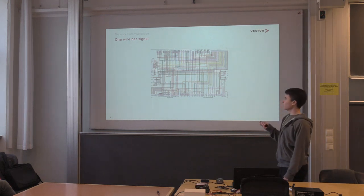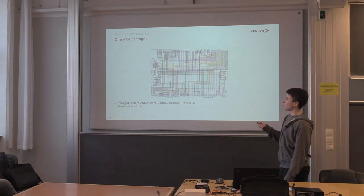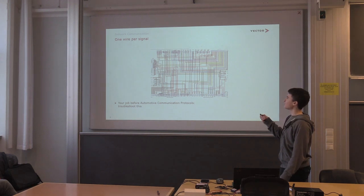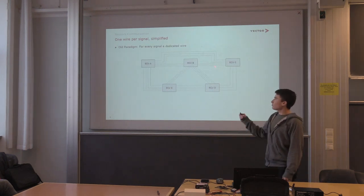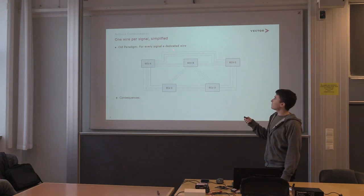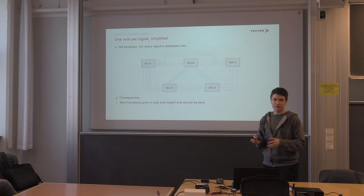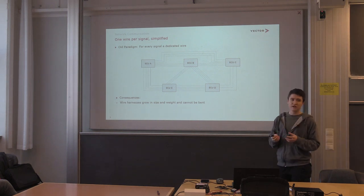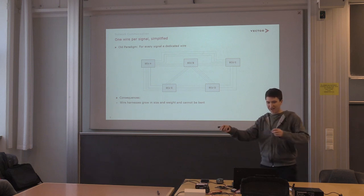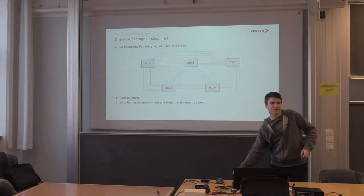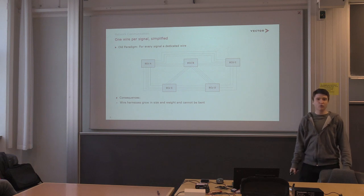In the past we had one wire per signal, so troubleshooting a wire harness with a bunch of lamps, computers, and sensors was a real challenge — good luck finding the fault. The old paradigm of one dedicated wire per signal resulted in massive, heavy wire harnesses that are difficult to bend and route. In a car with very limited space, running a single wire from the back to the front is manageable, but doing it with a hundred wires means they'll never fit.